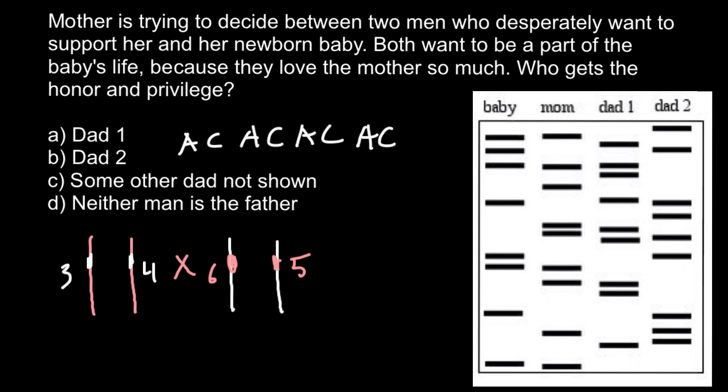Scientists call such repeated sequence the core sequence. So here is the core sequence that is repeated four times. And such variable number of tandem repeats would be flanked with stable sequence that is the same in every person.